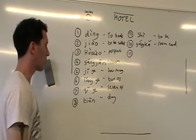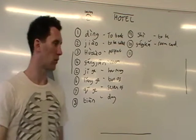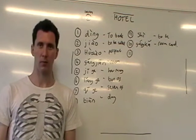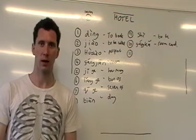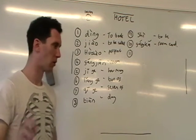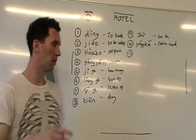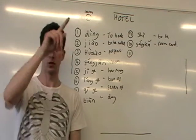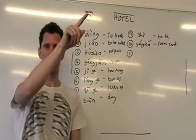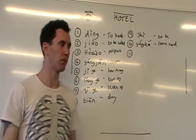Next one: 'how many.' It's jǐgè — gè is a measure word, as we've learned in previous lessons, like a unit of measurement. So 'how many' is jǐgè, third tone: jǐgè.